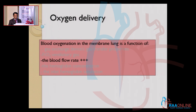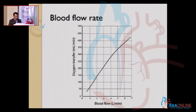Coming to the next parameter, that is the blood flow rate. The blood flow rate in an ECMO machine is more or less equivalent to the cardiac output, especially in VA ECMO. In VV ECMO it forms only a part of cardiac output.